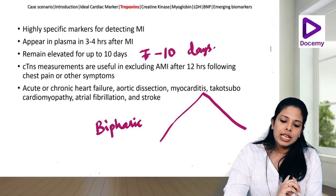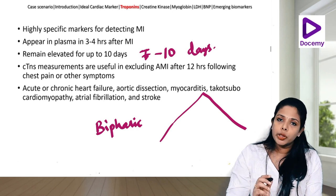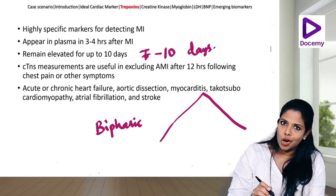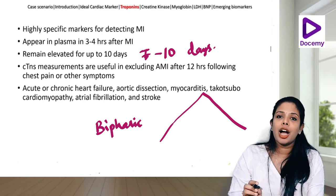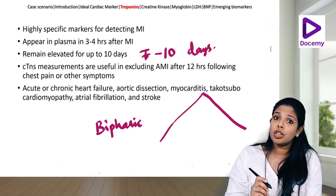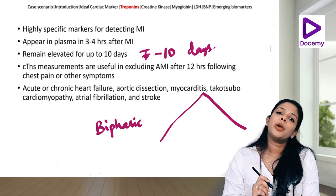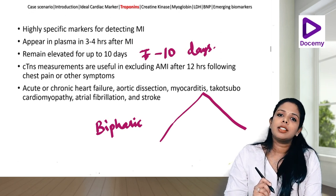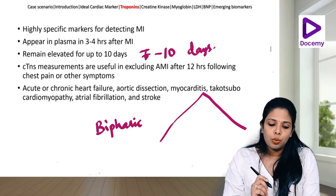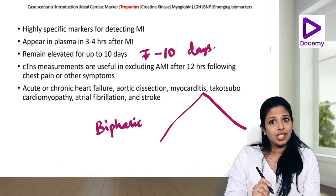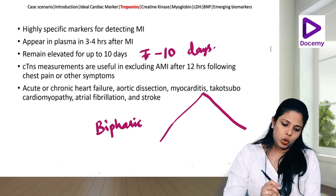Troponin elevation is also seen in acute or chronic heart failure, aortic dissection, chronic kidney disease, myocarditis, Takotsubo cardiomyopathy, atrial fibrillation, and stroke.